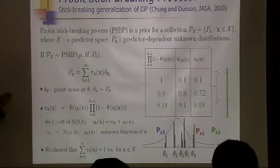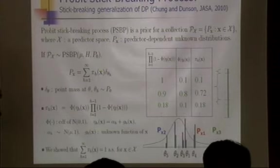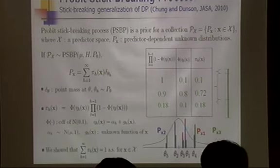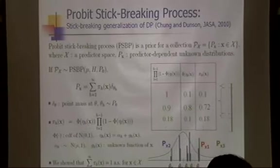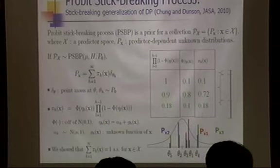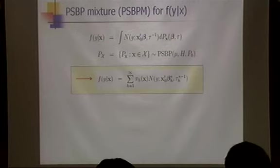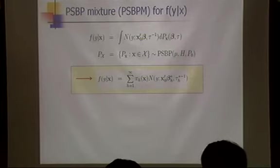If x1 and x2 are close to each other, the values generated are similar and you break the stick similarly, so P(x1) and P(x2) are highly correlated. If they are far apart, the distributions at x1 and x2 look very different. The PSBP is a distribution over a collection of predictor-dependent distributions. Using it as the mixture distribution gives a conditional density estimate as a predictor-dependent mixture of normal linear regression where data determines the number of effective components.